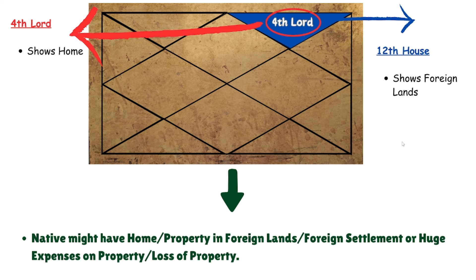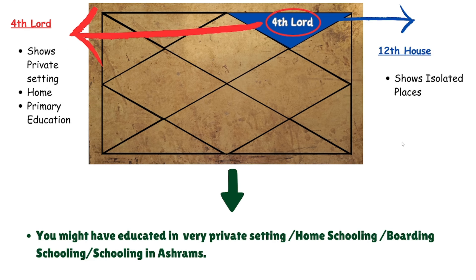This is a combination for foreign settlement. If it is a well-placed planet, all these things happen positively. If not placed well, there is a possibility of incurring huge expenses on your property or sometimes a loss of property. The fourth lord also shows a private setting within four walls of your home and primary education, and the twelfth house shows isolated places, so you might have taken your education in a private setting, homeschooling, boarding schools, or ashram schools.